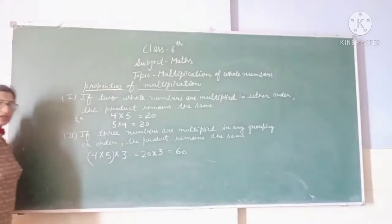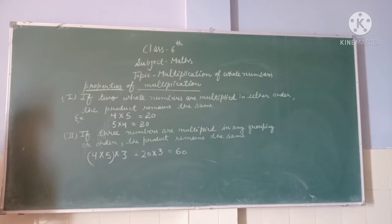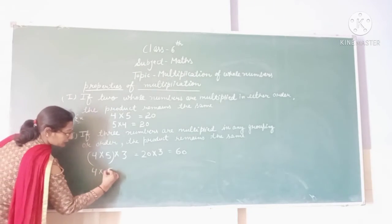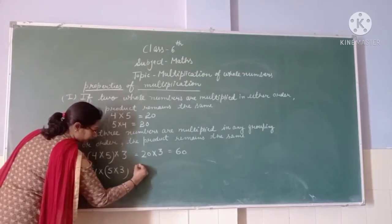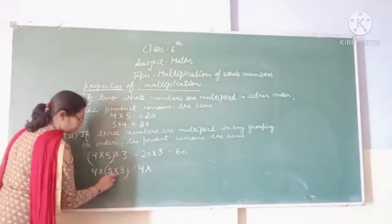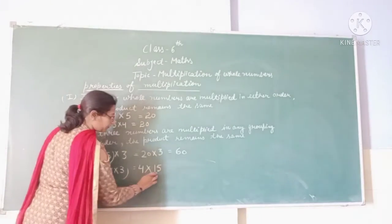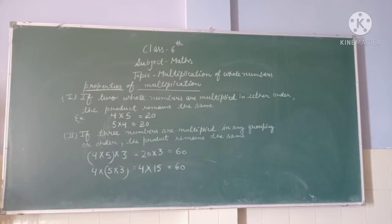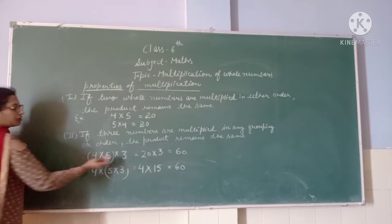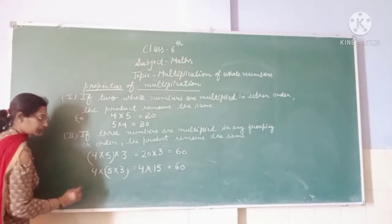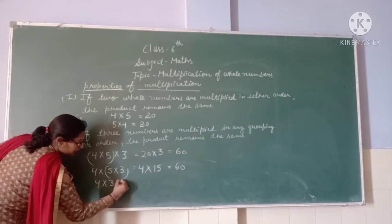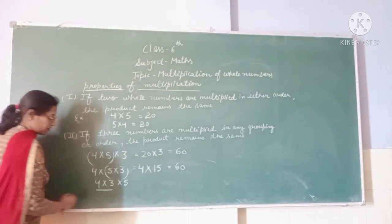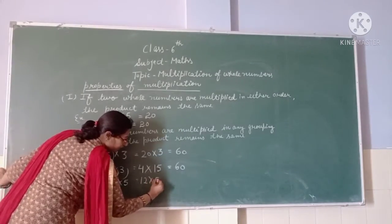20 into 3 gives sixty. Now if I change the grouping: I multiply 5 into 3 first — 5 times 3 are 15 — then 4 times 15 gives sixty. The product remains the same either way.